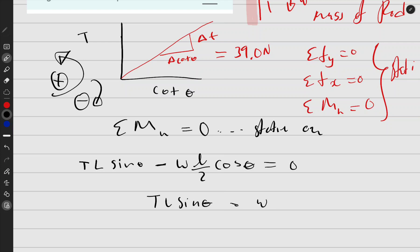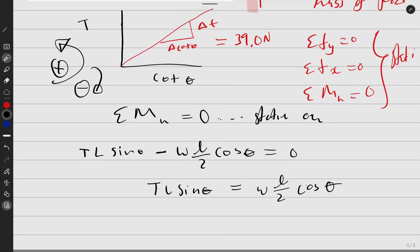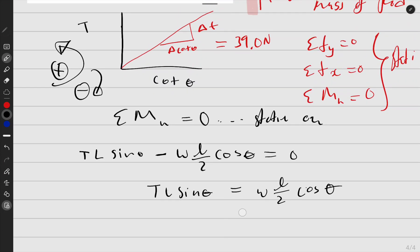Okay, so now I have T L sine theta, and I take this to the other side. I'll have weight equals L over two cos theta. Okay, it's looking good. Okay, this is what we have, but I've noticed the L's on both sides, so we don't want this—just go away. So we'll have T sine theta equals weight over two cos theta.